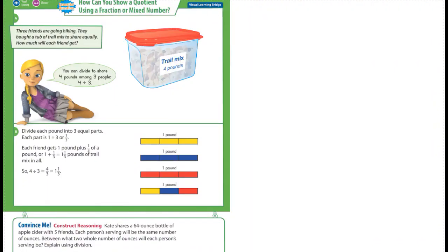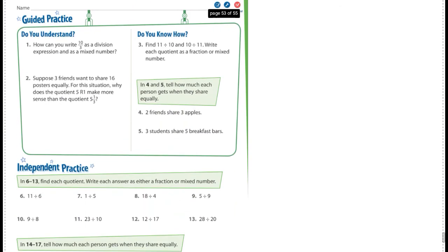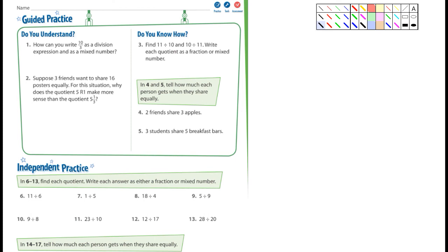All right. So, here we are in 9-2. And I'm just jumping right in. And, again, this is stuff you guys know. Let's see here. This is an example. Three friends go hiking. They bought a tub of trail mix to share equally. How much will each friend get? Well, let's see here. It's four pounds. If there's three friends, it's going to be four divided by three. I mean, they do it there for you. It's just an example. Okay. I'm not worried about the convince me. Guided practice. Next page. What page is this? This is page 391.